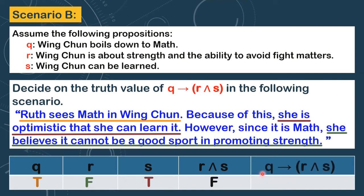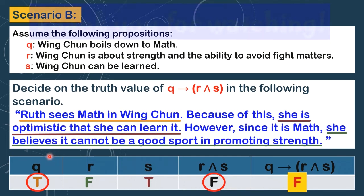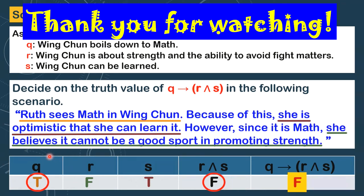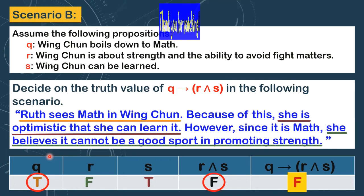Finally, we get the truth value of this conditional statement. We focus on these two truth values: your hypothesis is true and your conclusion is false. This is the only case where a conditional statement is false. So this is the final answer — the truth value of if Q, then R and S is false. I hope you learned something from this video. Please don't forget to like this video, share it with your friends, and subscribe to my channel for more videos like this. Thank you for watching — see you in my next video.